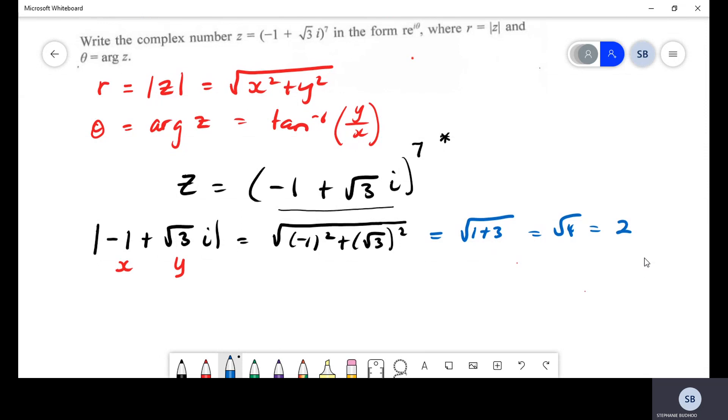Now all we have to find is that value of θ or the argument. So finding the argument, and I will state it like this instead: the argument of -1 + √3. The reason I did not write the argument of z is because z in the question is being raised to the power of 7, and we are only actually finding the argument of what's contained inside the brackets, so what we are finding is not the argument of z just yet.